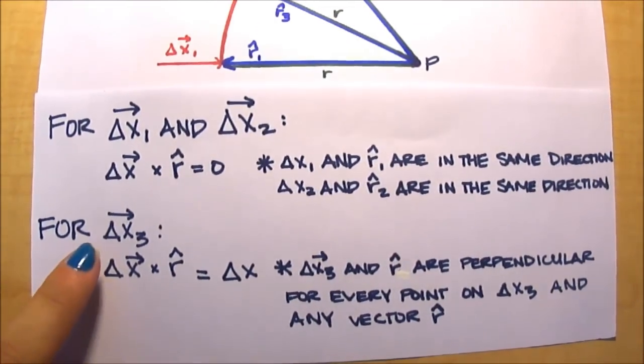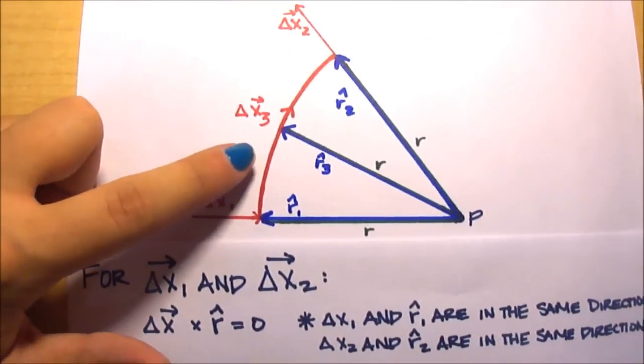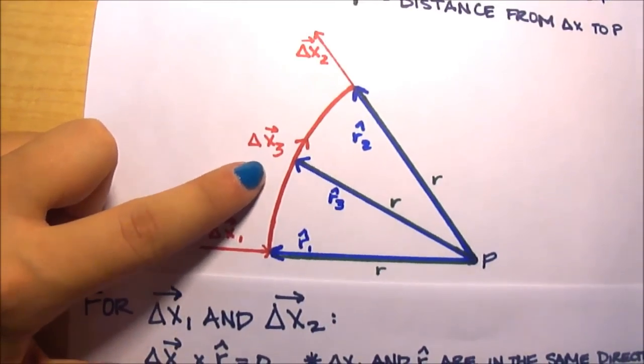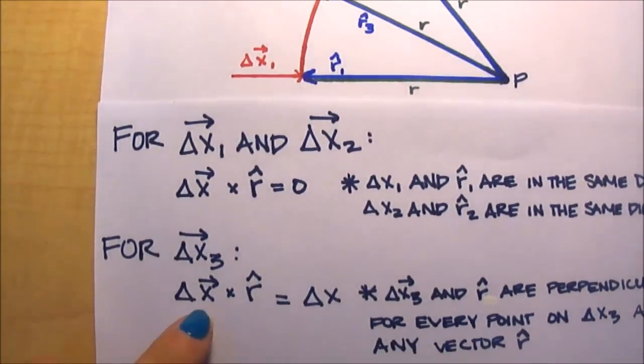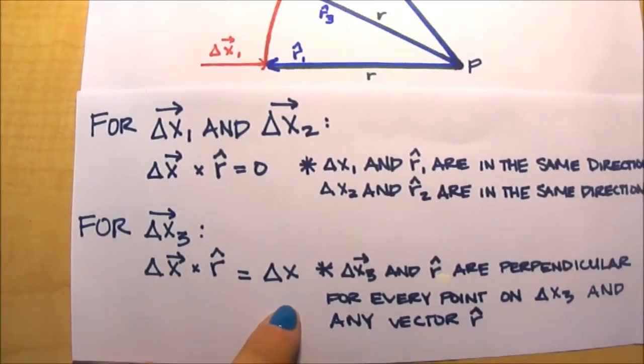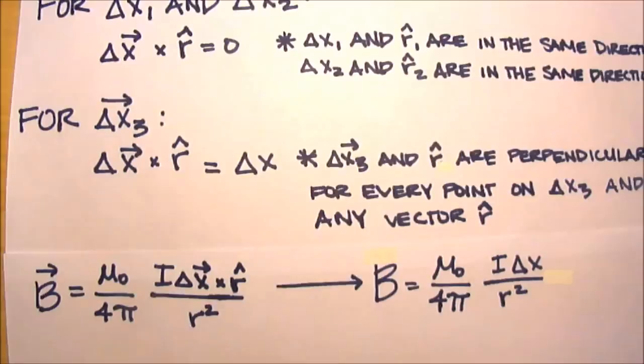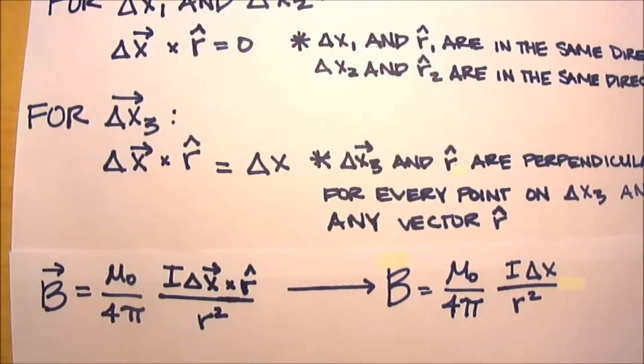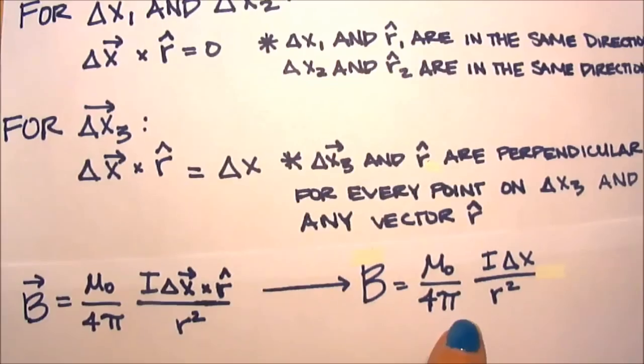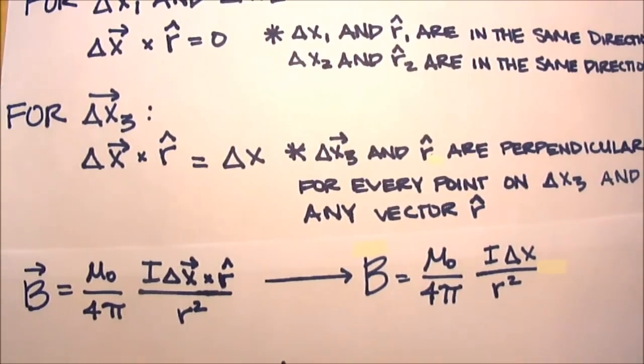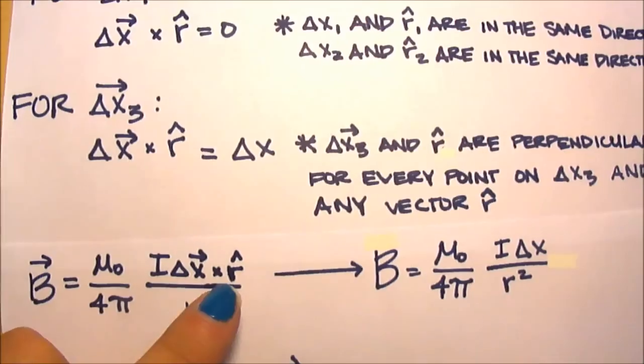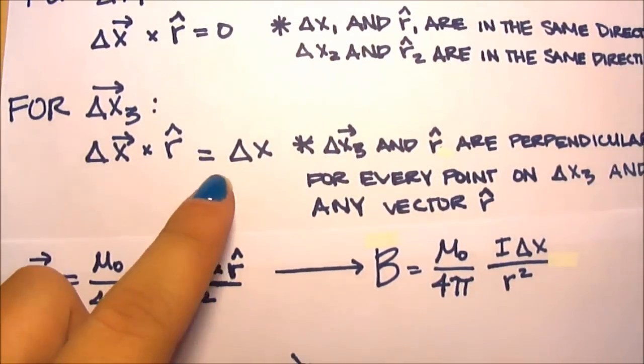For Δx₃ vector, however, the r̂₃ vector actually meets with the Δx₃ vector at a 90 degree angle, which means that the cross product of Δx⃗ vector and r̂ is simply going to be Δx. With that information, you can reduce the Biot-Savart law to this function over here, which basically all you have to do is change this cross product of the Δx⃗ vector and the r̂ to the Δx, as we found back here.